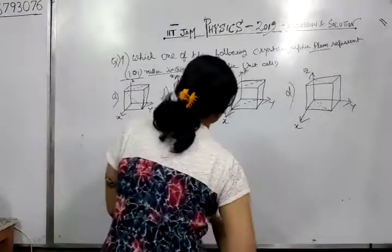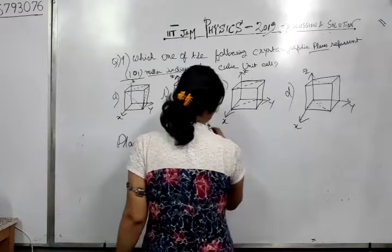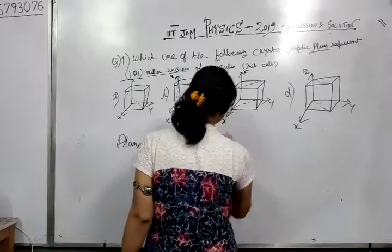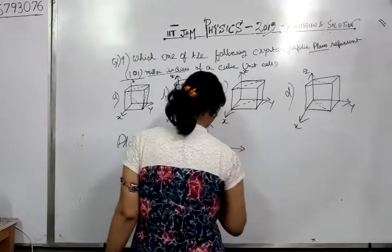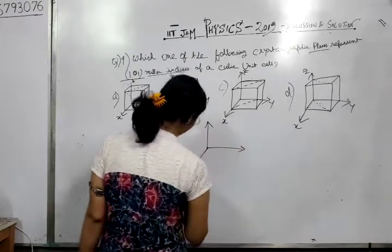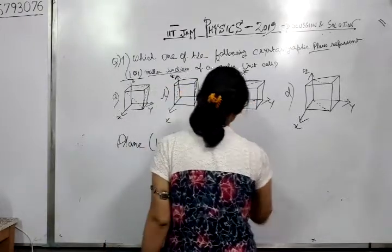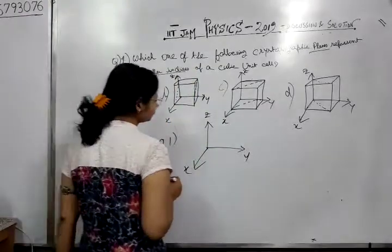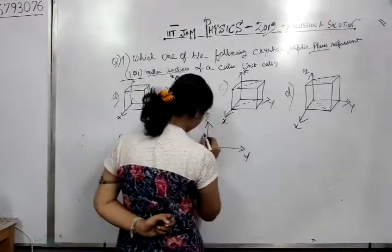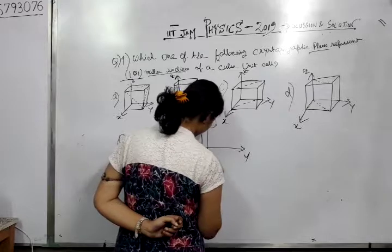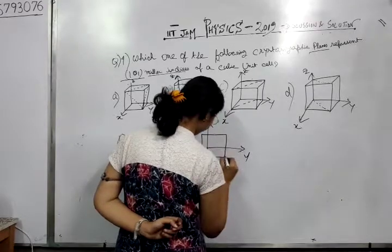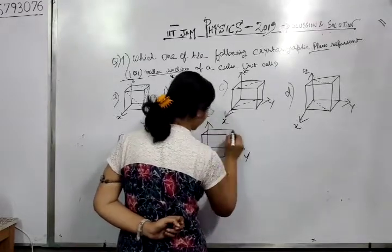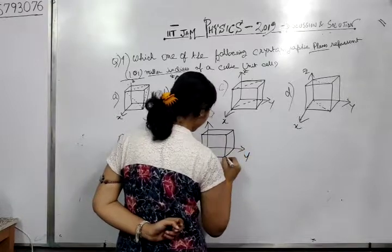If we draw any simple cubic cell, this is the x-axis, this is the y-axis, this is the z-axis here. So if we draw any simple cubic structure, this is the simple cubic structure.